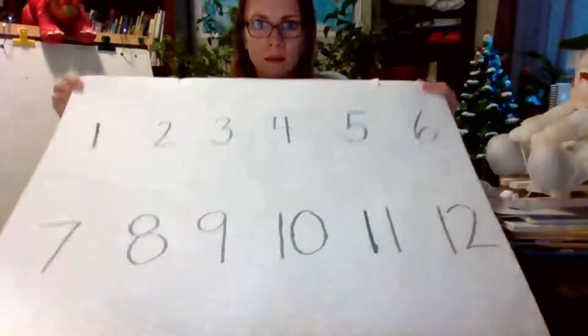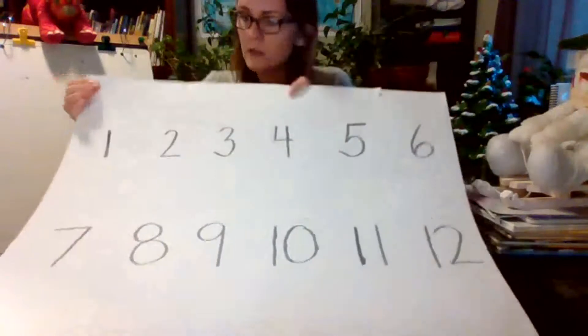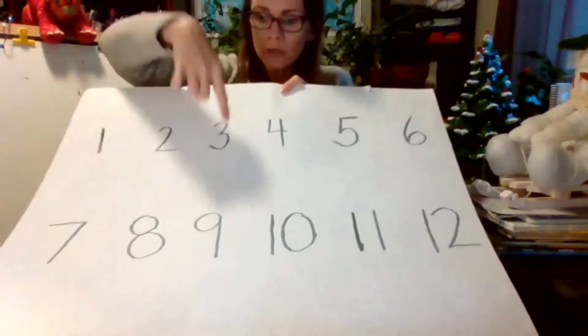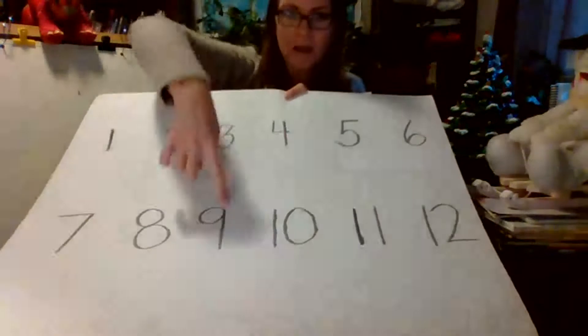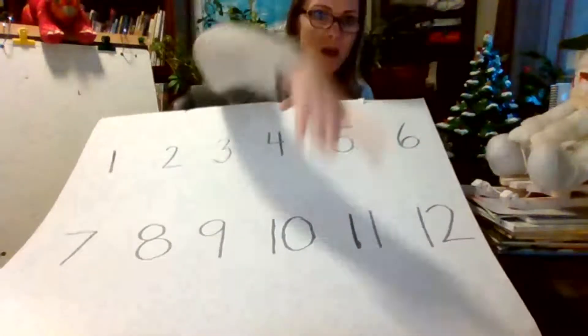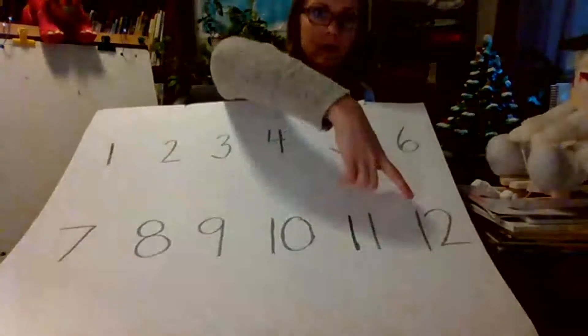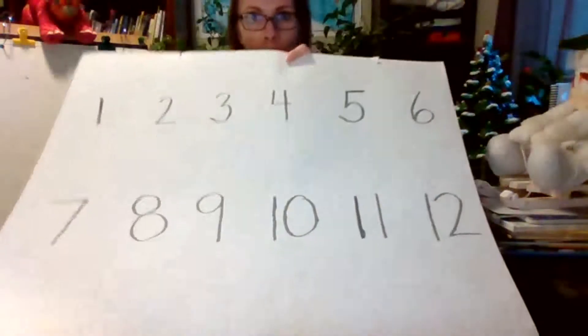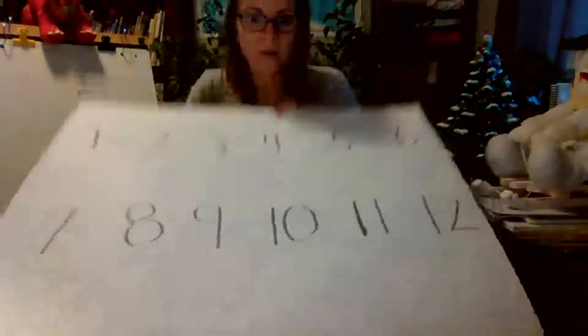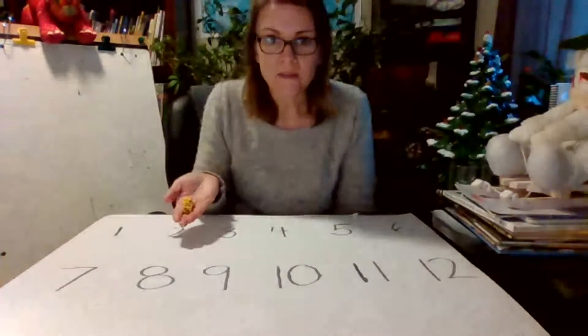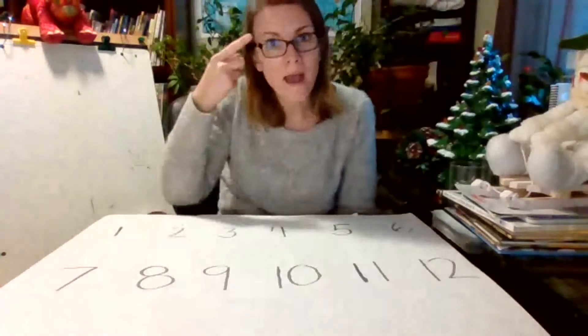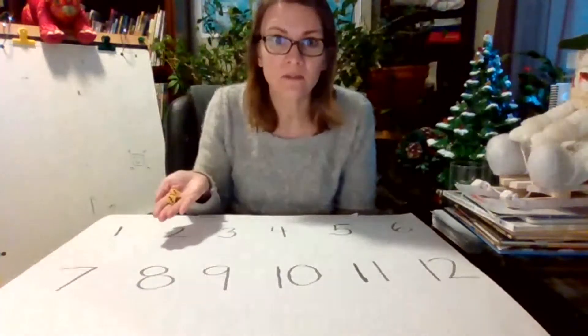On this side I have numbers one, two, three, four, five, six, seven, eight, nine, ten, eleven, twelve—one to twelve. So this time I'm going to roll two dice and I'm going to add the numbers together.